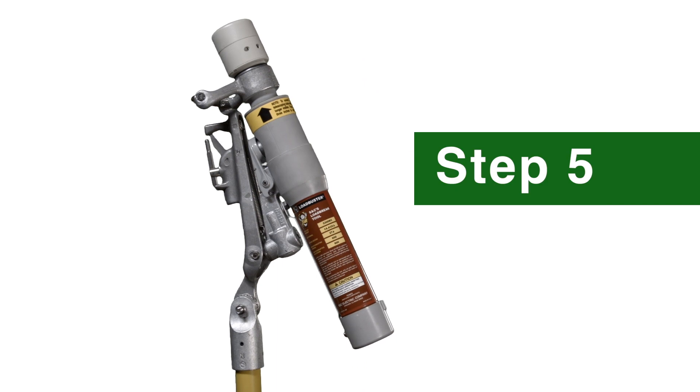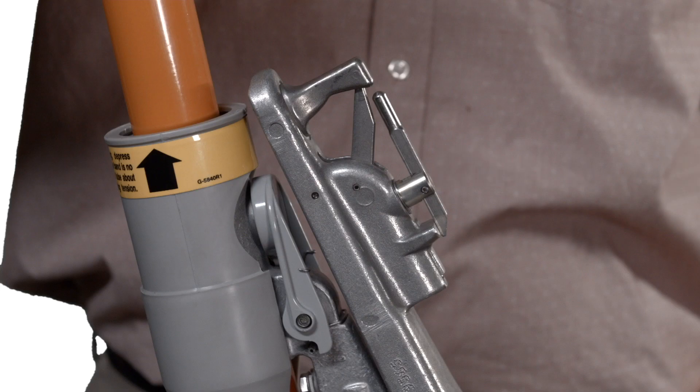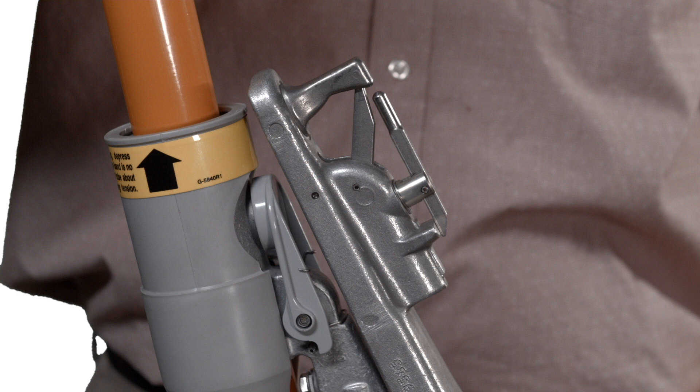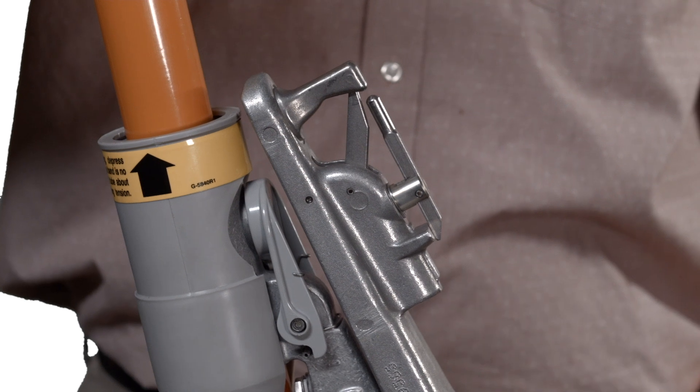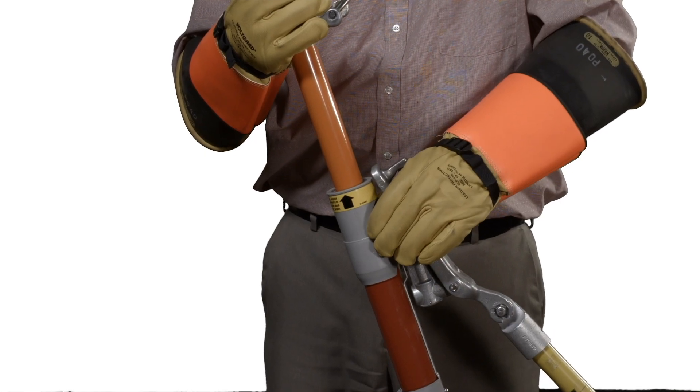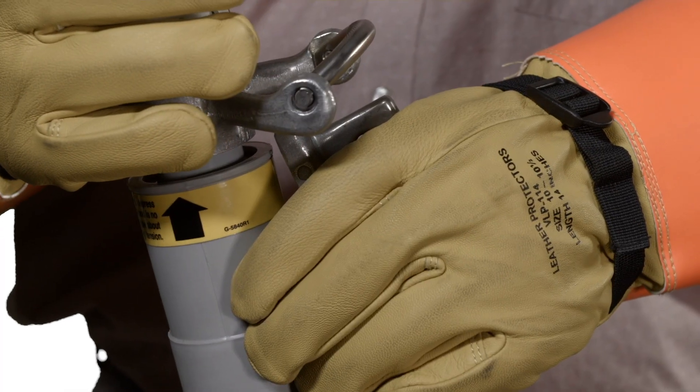Step 5: To reset the Loadbuster tool for the next operation, extend the tool slightly and lift the resetting latch with your thumb. With the latch up, press down on the inner tube assembly until the tool is closed completely so the trigger can reset itself.